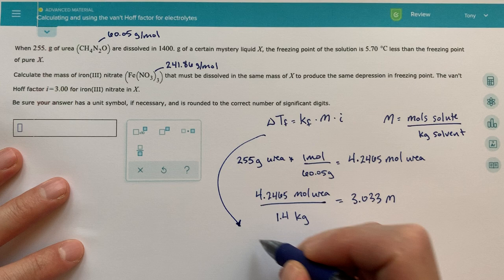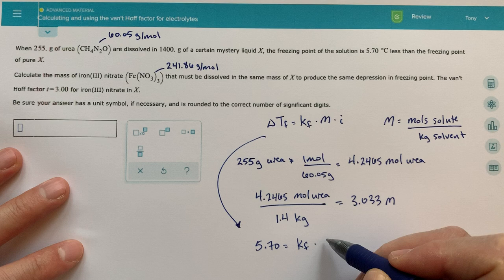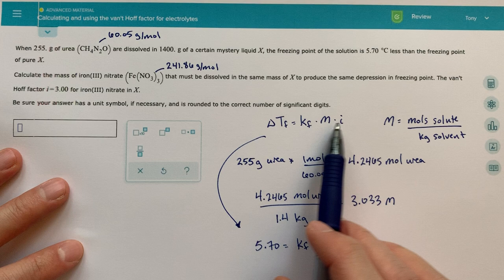Our delta TF, we're told, is 5.7. So I'm just going to start applying this equation down here. So 5.70 equals KF. That's our unknown. We don't know what that KF is because we're dealing with this mystery liquid.